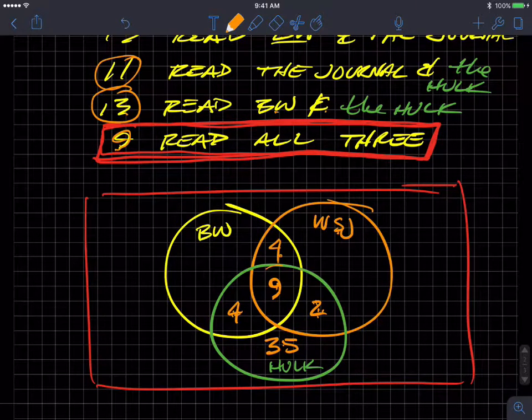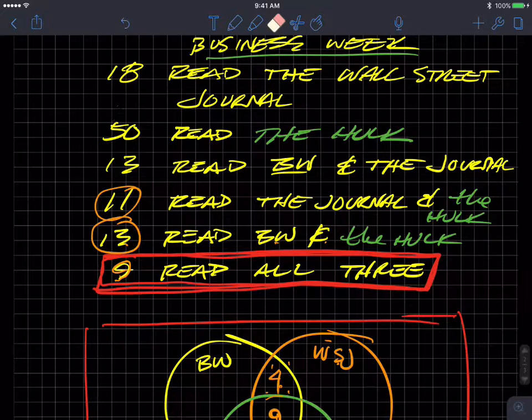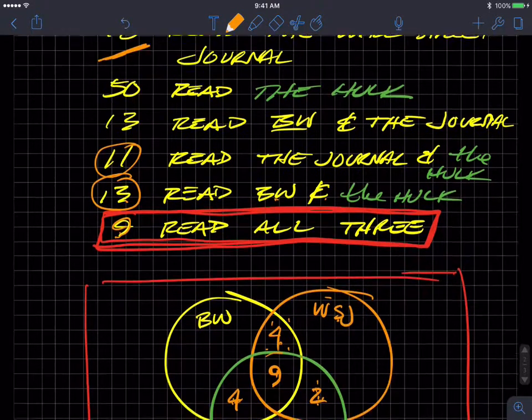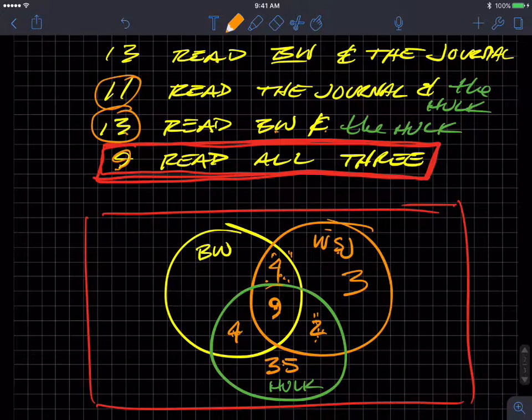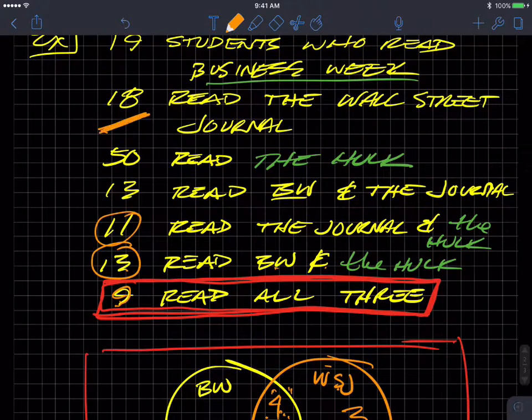35, 4, 9, and 2. If we go then and look at the 18, 18 then read the Wall Street Journal alone. So that means 9, 10, 11, 12, 13, 14, 15. This must be 3 to get this Wall Street Journal circle of orange to be a total of 18.